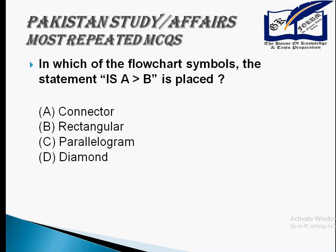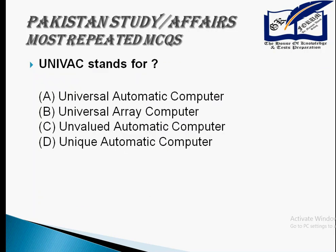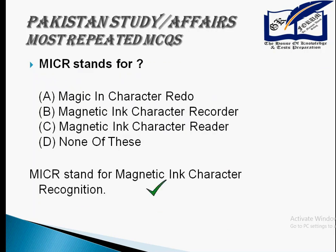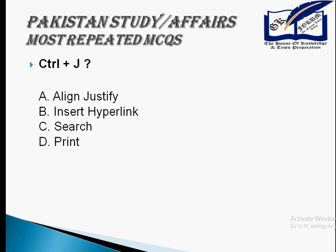In a flowchart, which symbol represents the statement 'a is greater than b'? It's a diamond. In basic, the log function refers to the natural logarithm with base E. UNIVAC stands for Universal Automatic Computer. MICR stands for Magnetic Ink Character Recognition. The greater-than sign is an example of a logical operation. Ctrl+J is for align justify.